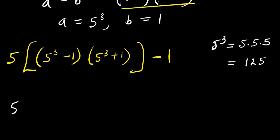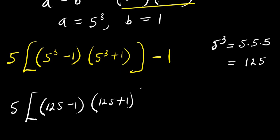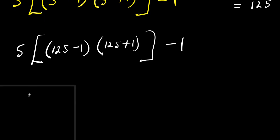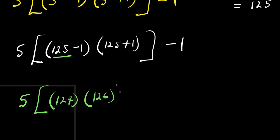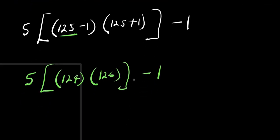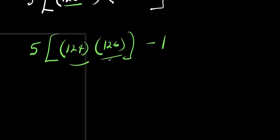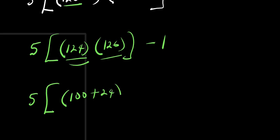So this is 5 times 125. So this is 5 times 125 minus 1 times 125 plus 1, and this is minus 1. So from here, I have 5 times 124 times 126. Then this is minus 1.